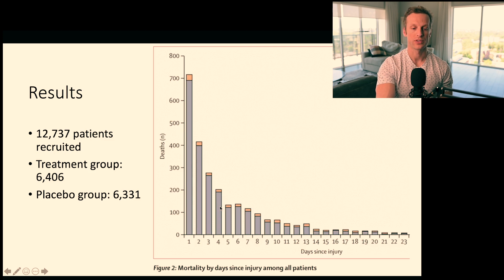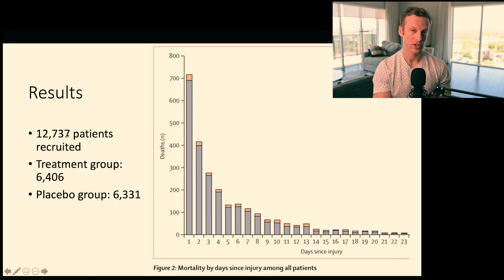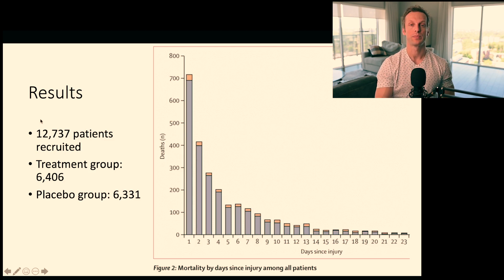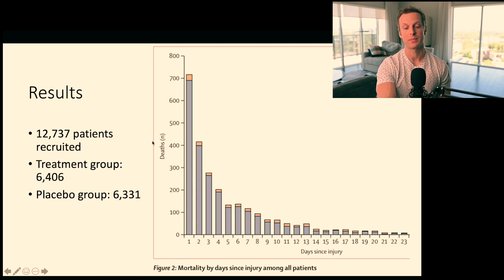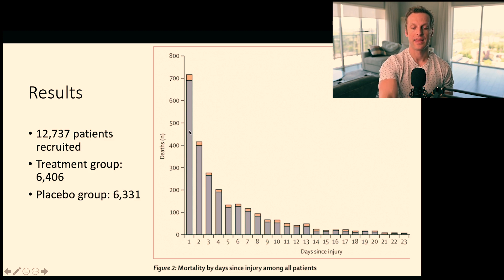They recruited 12,737 patients — actually more than originally planned. They originally planned 10,000 patients, but by decreasing the treatment window and recognizing that more severe patients were less likely to benefit, they had to revise their power calculations and increase recruitment. In the end they had approximately 6,400 in the treatment group and 6,300 in the placebo group.